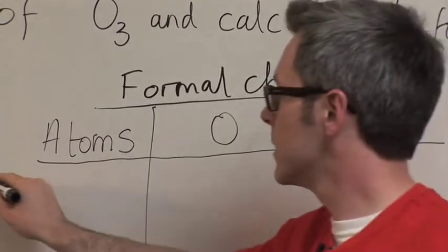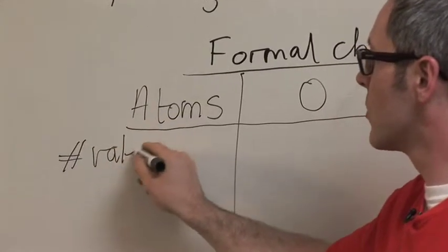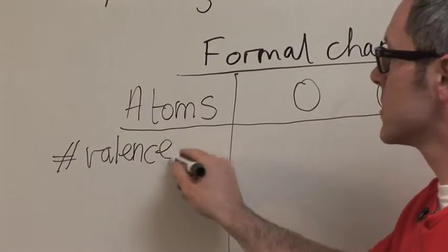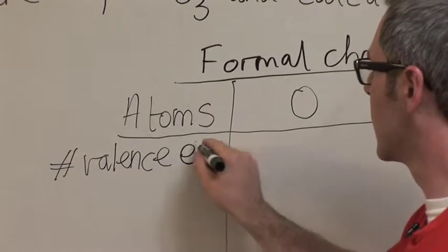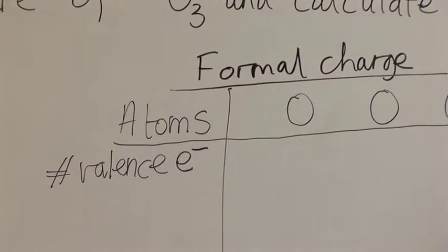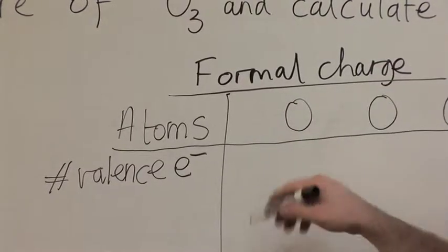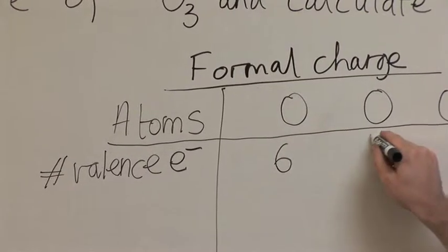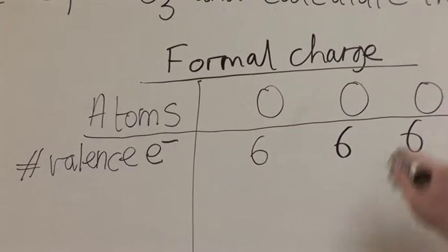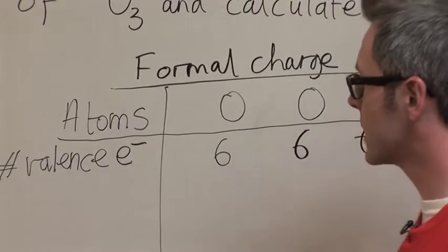And I next need to list my number of valence electrons. So remember, valence electrons are the electrons on the outermost subshell of the atom. The number of valence electrons, oxygen is in group 16 of the periodic table, or it's the sixth main group. So it has six valence electrons. And because we have three oxygens, they all are identical, so they all have six valence electrons.